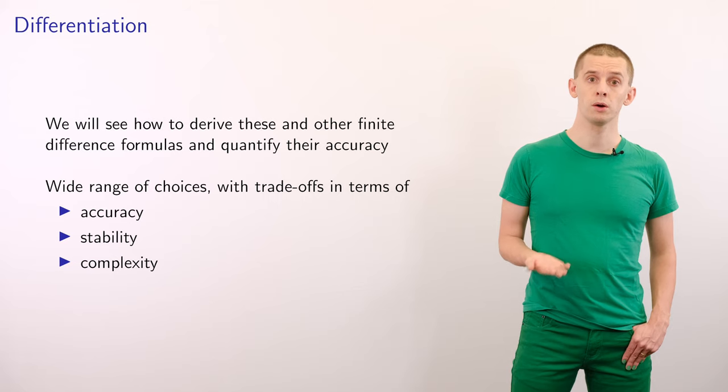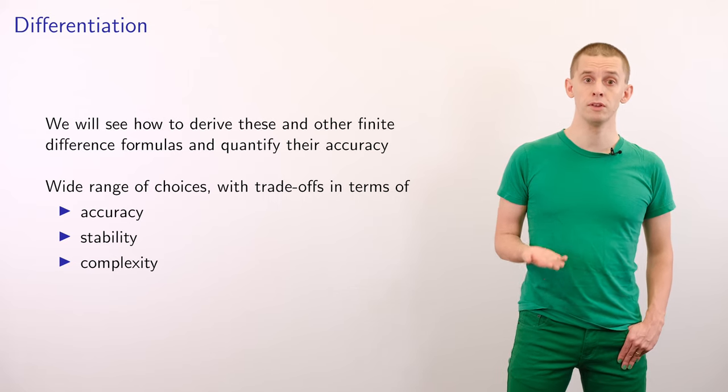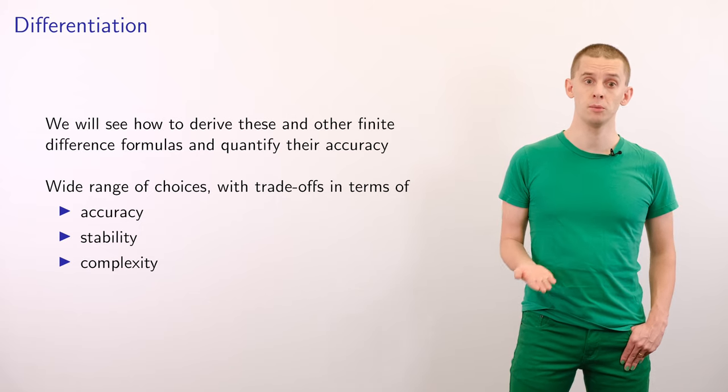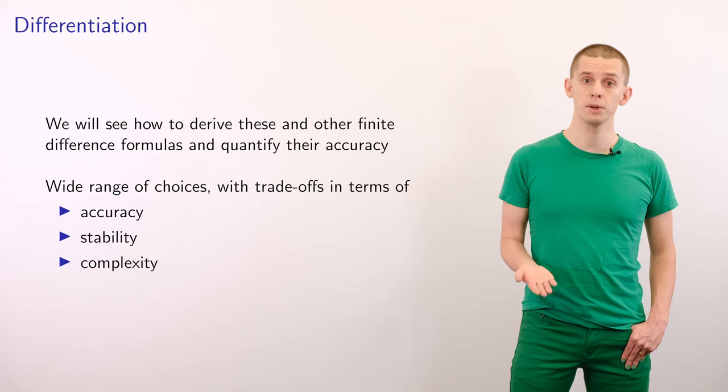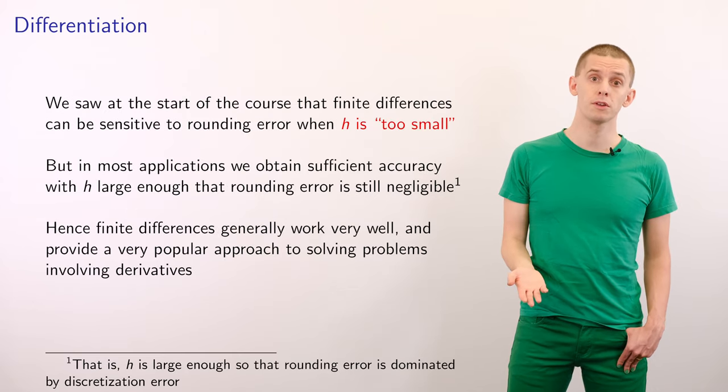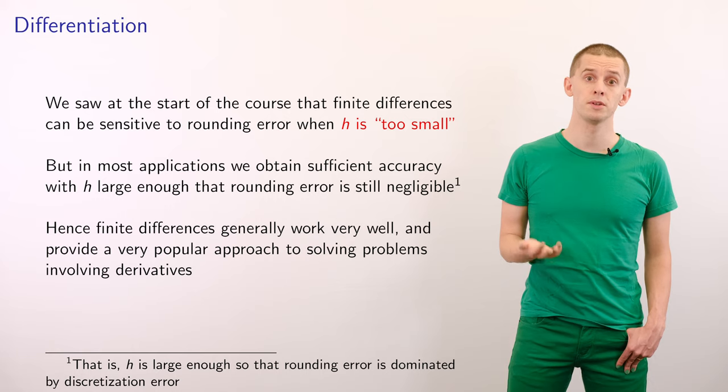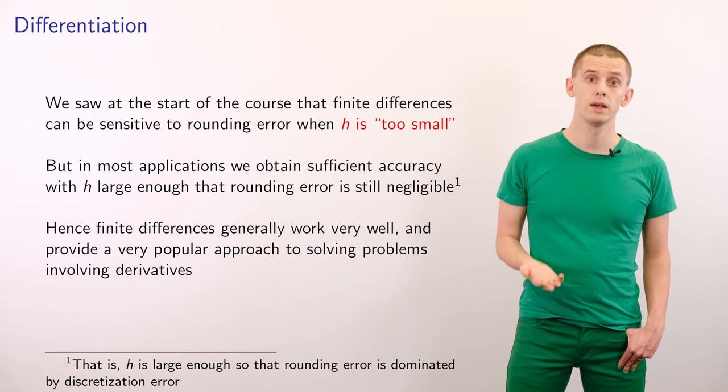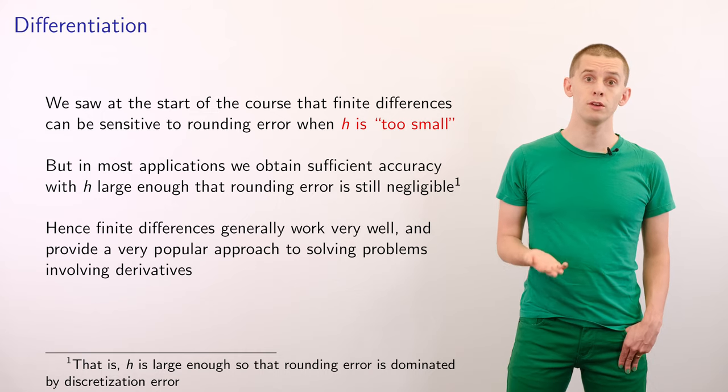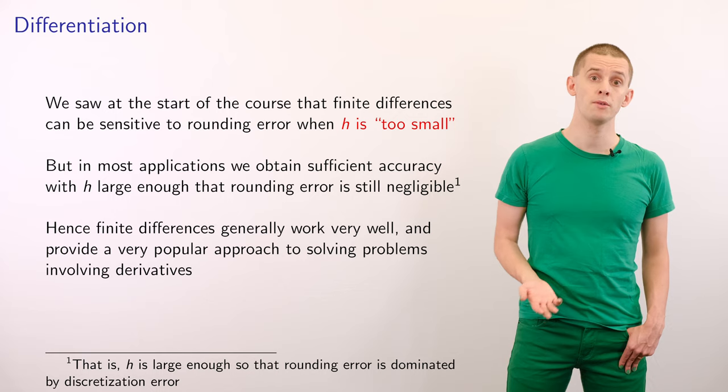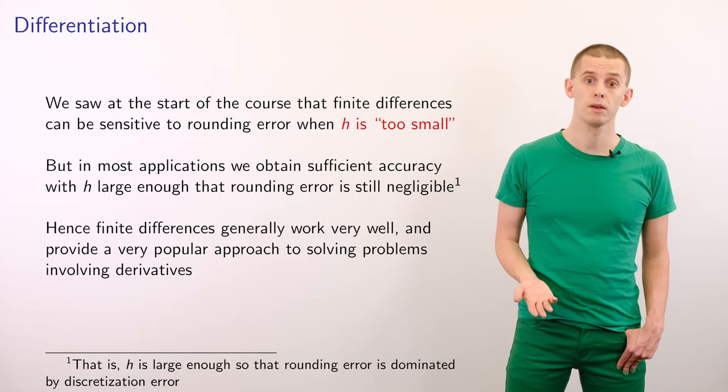In this unit, we're going to look at how we can derive these formulas and others. We'll see that there are a wide range of choices and trade-offs in terms of accuracy, stability, and complexity. We saw at the start of the course that finite differences can be sensitive to rounding error if h is taken to be too small. However, in practice, we can usually obtain sufficient accuracy with h large enough that rounding error is negligible. Hence, finite differences generally work very well and provide a popular approach for solving problems involving derivatives.